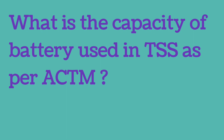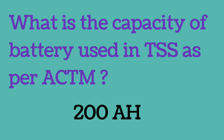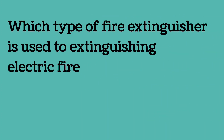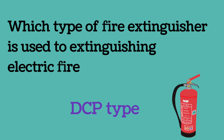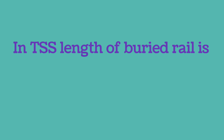The capacity of the battery used in TSS as per ACTM (AC Traction Manual) is 200 AH (ampere hours). The type of fire extinguisher used to extinguish electric fire is DCP type — dry chemical powder type. In TSS, the length of buried rail is 13 meters.